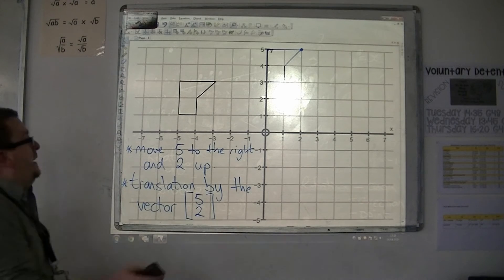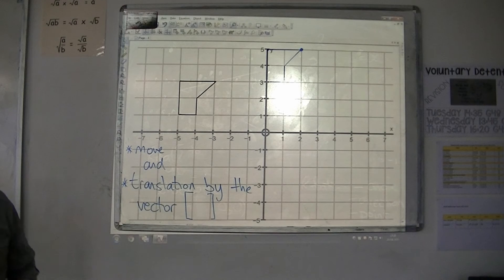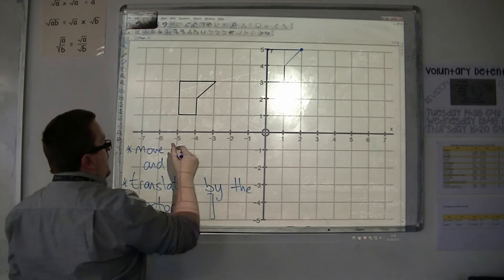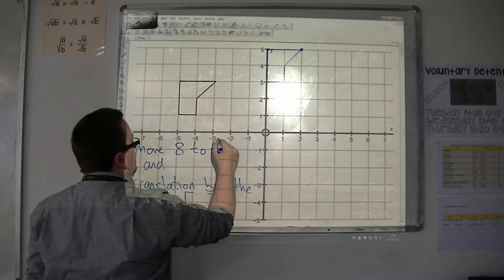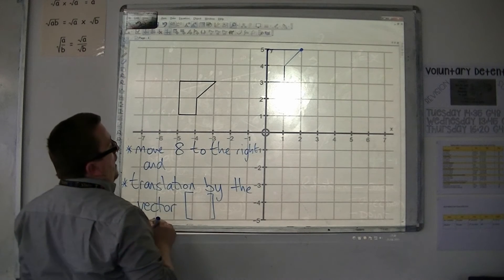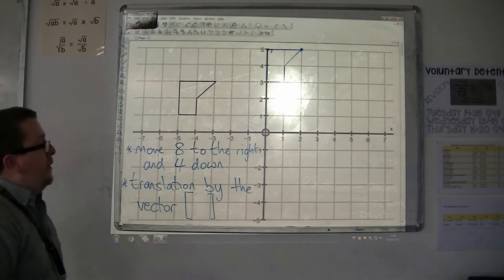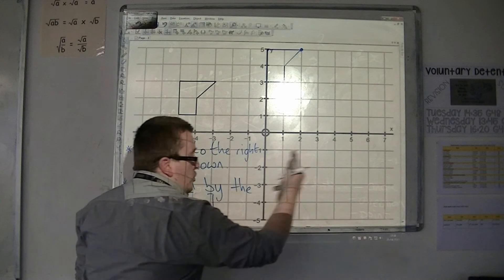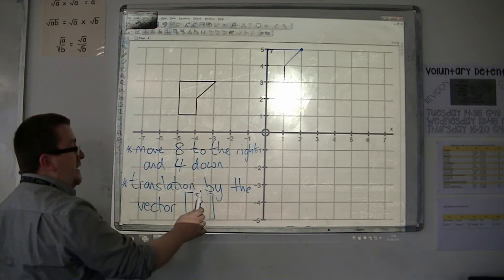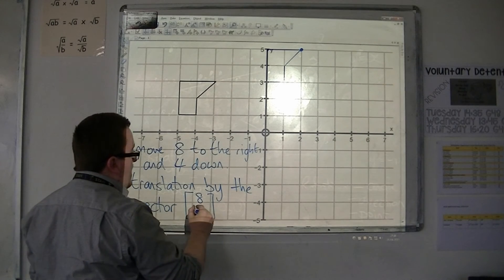Now, let's do another example. Let's say that we are going to move, this time, eight to the right. And let's go four down. Now, because we're going in the positive direction, to the right, it would be a positive eight in the vector. So translation by the vector eight, and four down is in the negative y direction. So it would be minus four.